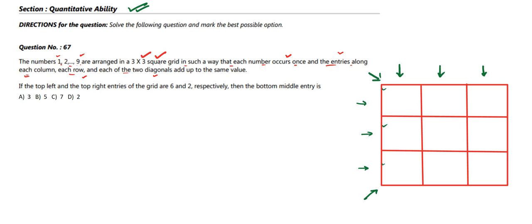The question tells us that the top-left entry is 6 and the top-right entry is 2. We need to find the bottom-middle entry. So we place 6 in the top-left cell and 2 in the top-right cell, and we need to determine the value in the bottom-middle cell.